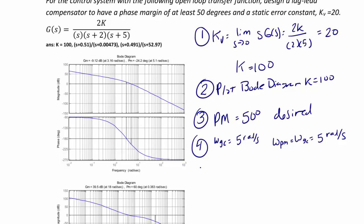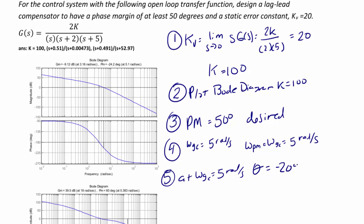Step five, at omega gc equal to 5 radians per second, the phase angle is negative 204 degrees, and this is our uncompensated phase.